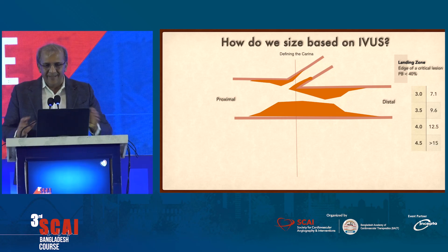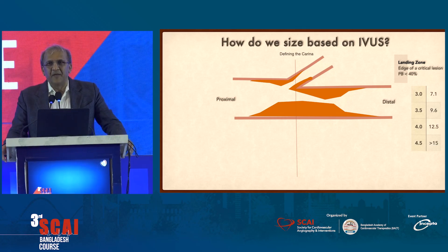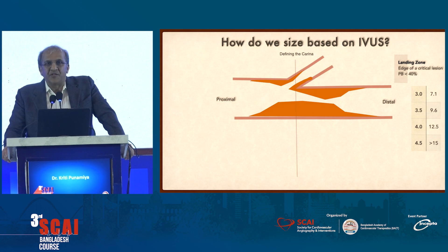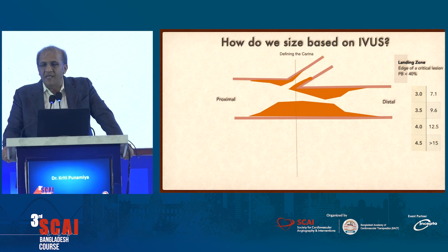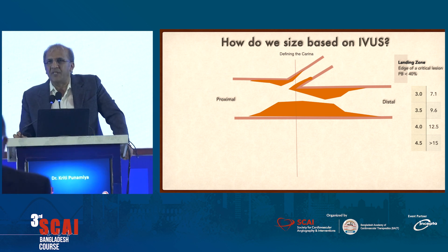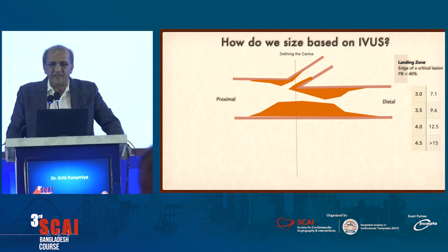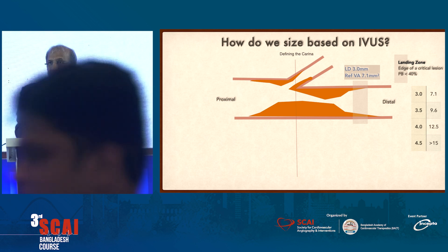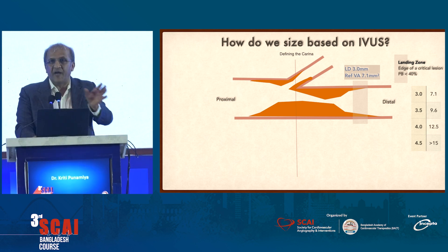Coming back to the SCAR tool, this is a representation of a block that we all see every day. What's a landing zone? A landing zone is an edge of a critical lesion with a block burden of less than 40 percent. That's the most important number we need to remember when finding a landing zone. In this particular case, the landing zone is not a line — it's a band of three or four millimeters where we need to find whether we can actually place a stent.